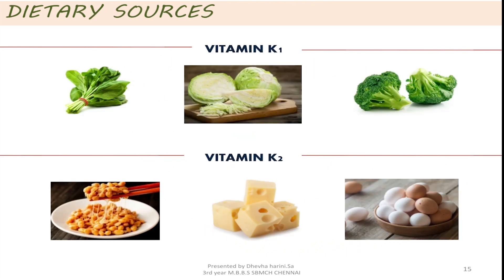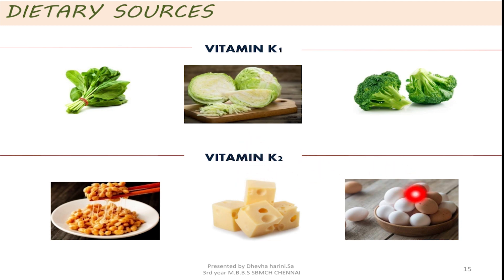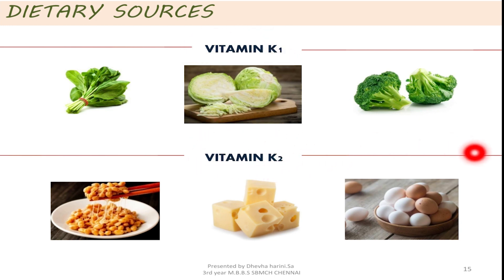Dietary sources: vitamin K1 is present in plants, so it is obtained from green leafy vegetables such as spinach, cabbage and broccoli. Vitamin K2 is produced by intestinal bacteria and found in animals, so it is obtained from compounds like cheese, eggs, natto and meat. Vitamin K3 is in synthetic form. Vitamin K1 is the main type of dietary vitamin, whereas vitamin K2 is a lesser source. When there is a lower level of vitamin K, it can lead to increased risk of uncontrolled bleeding, which can be commonly seen in newborn infants. So a single injection of vitamin K is necessary for newborn infants.